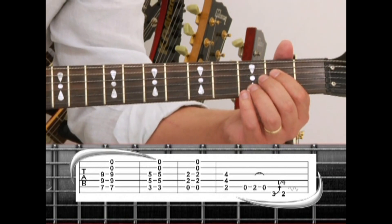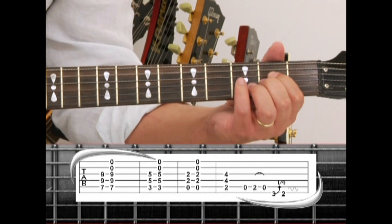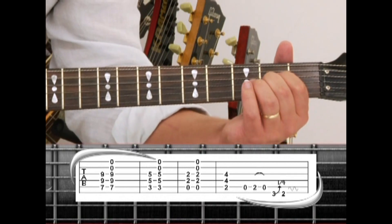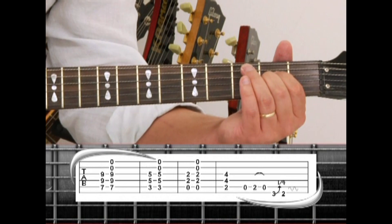Drop down to the open A. 5th string open, 4th string 2nd and 3rd string 2nd. Strumming just these 3 strings, we have A5. Adding the open strings for an A5 drone.